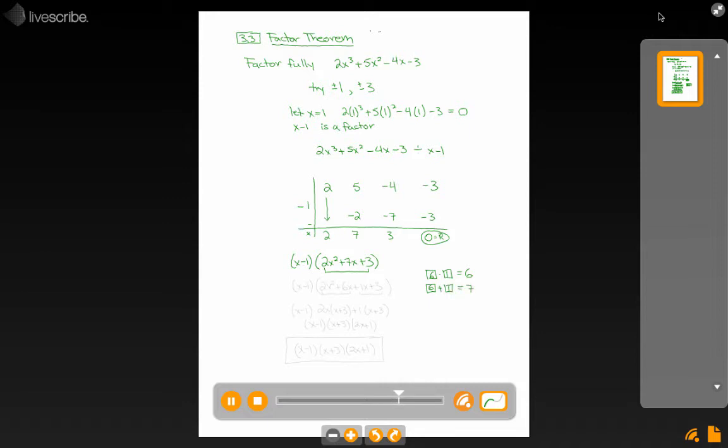So my magic numbers, as I call them, are 6 and 1, and so I decompose this middle term into 6x and 1x.